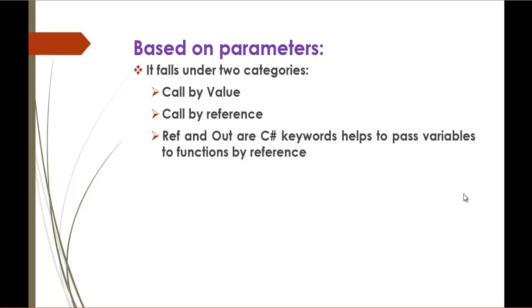Based on parameters, it has two categories: call by value and call by reference. By default, variable data which is passed from one function to another function is passed by value. If you want to call by reference, then you have to use two keywords — C-Sharp keywords: ref and out — which will pass variable data from one function to another function by reference. To understand it very clearly, we will jump into a demo.